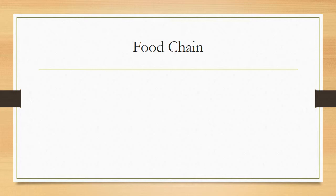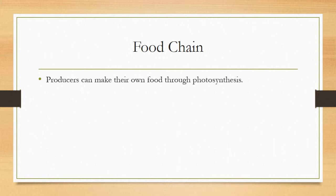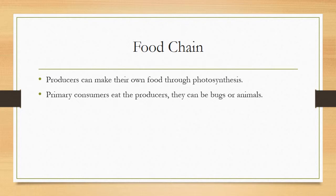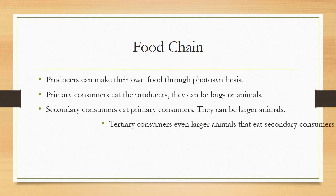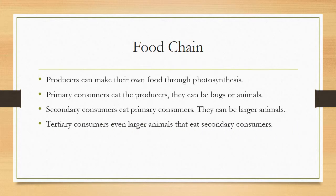Let's start with the food chain. The food chain is made up of many different things, and it's the circle of life. It all starts with the producers, which can make their own food through photosynthesis. Primary consumers eat the producers — they can be bugs or animals. Secondary consumers eat the primary consumers and can be larger animals. Tertiary consumers are even larger animals that eat secondary consumers. Decomposers are microorganisms that eat dead consumers.